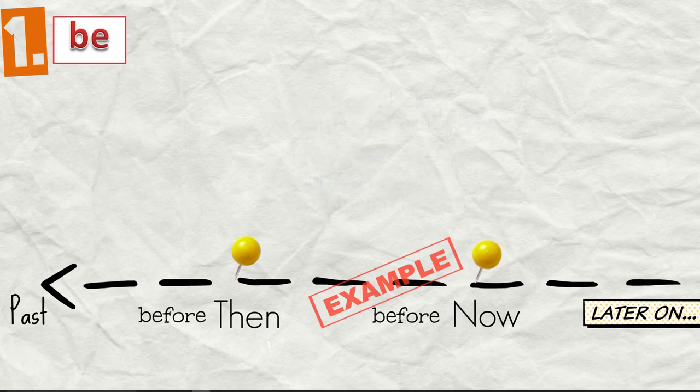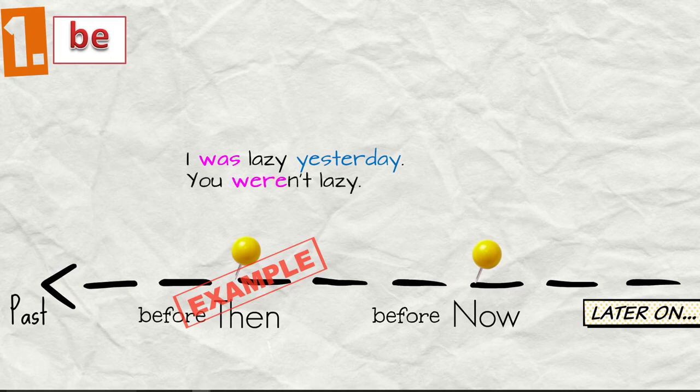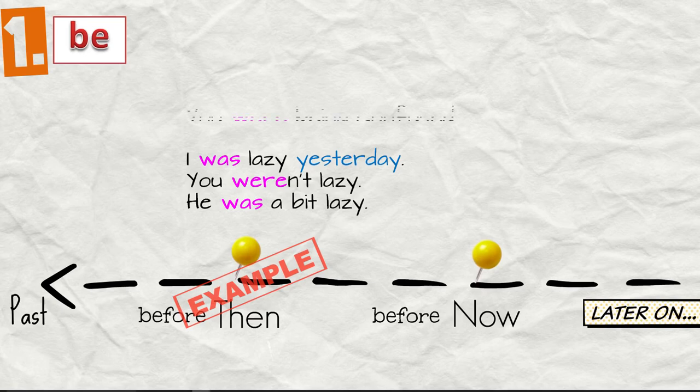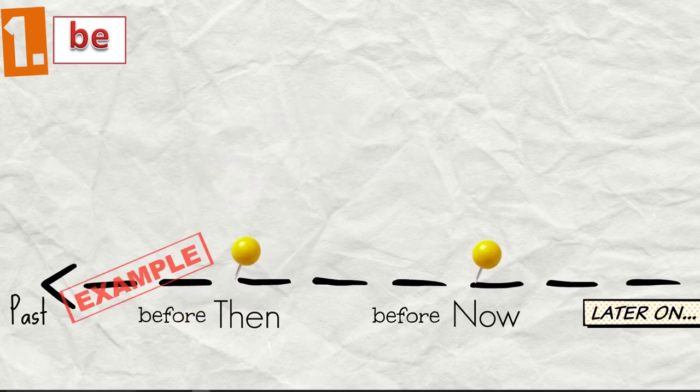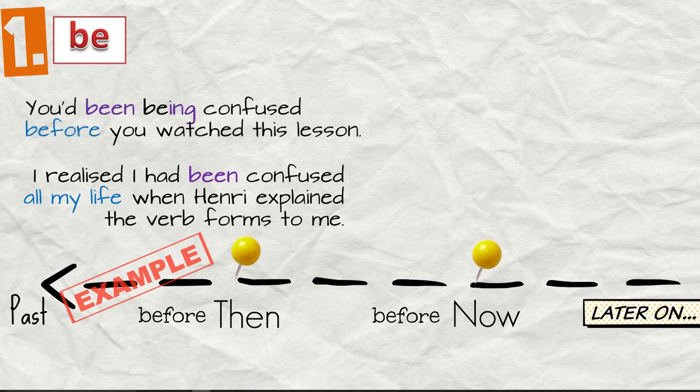The past. I was lazy yesterday. You weren't lazy. He was a bit lazy. You were being confused. And before then, I realized I had been confused all my life when Henry explained the verb forms to me. You'd been being confused before you watched this lesson.